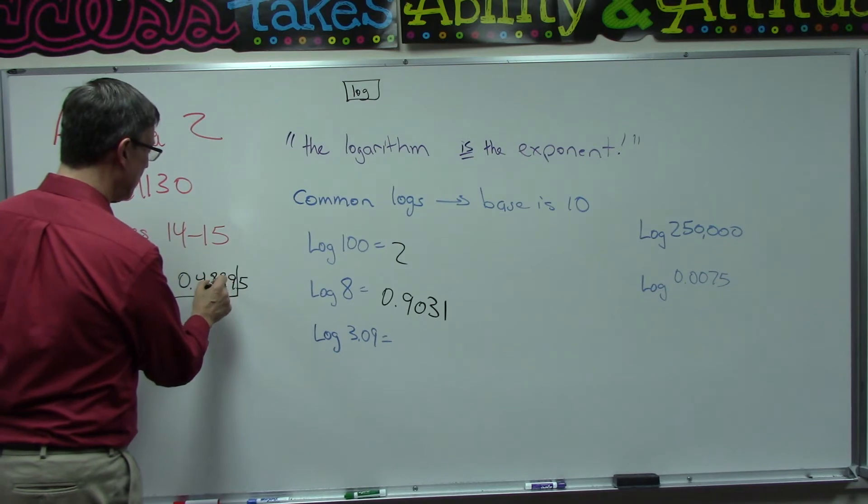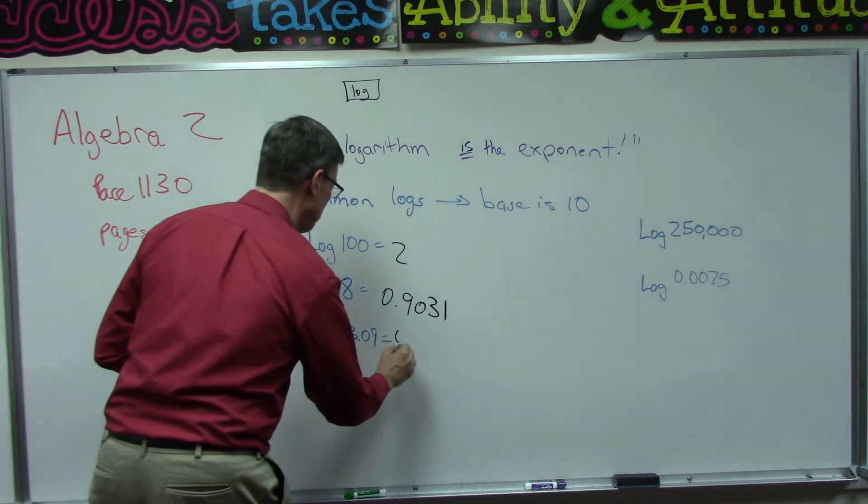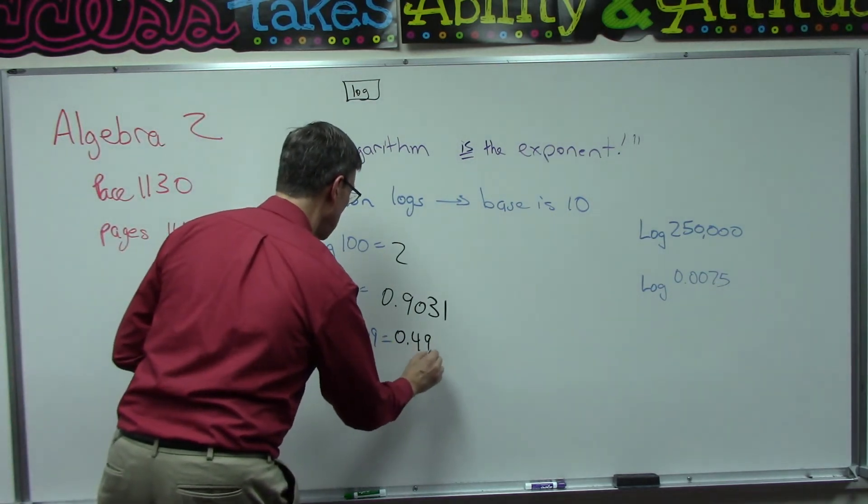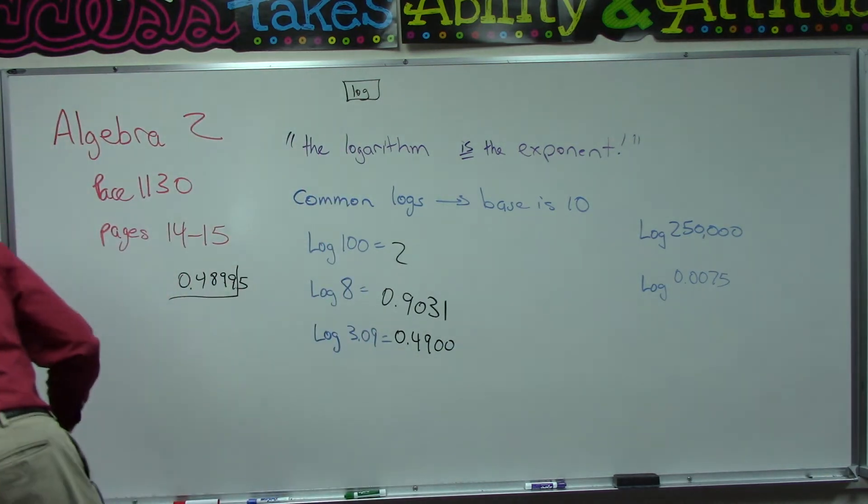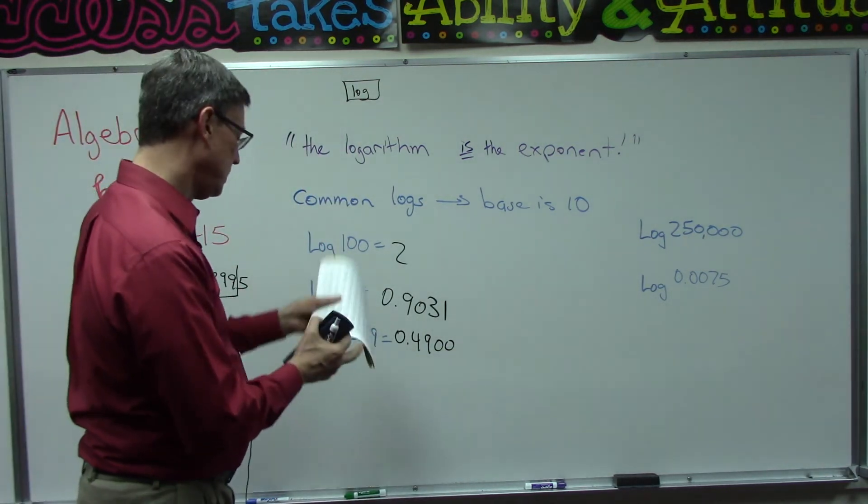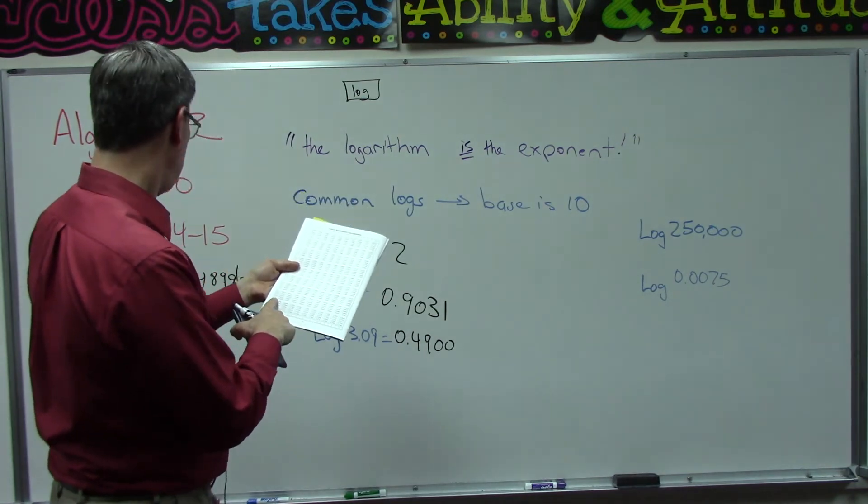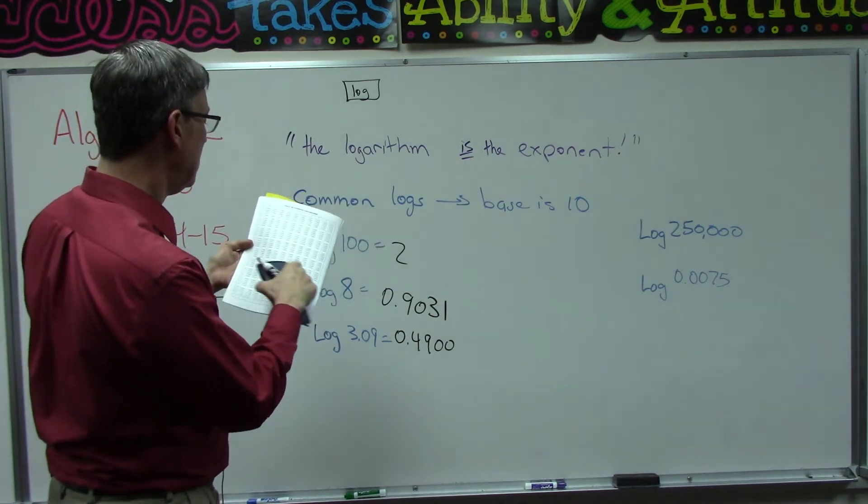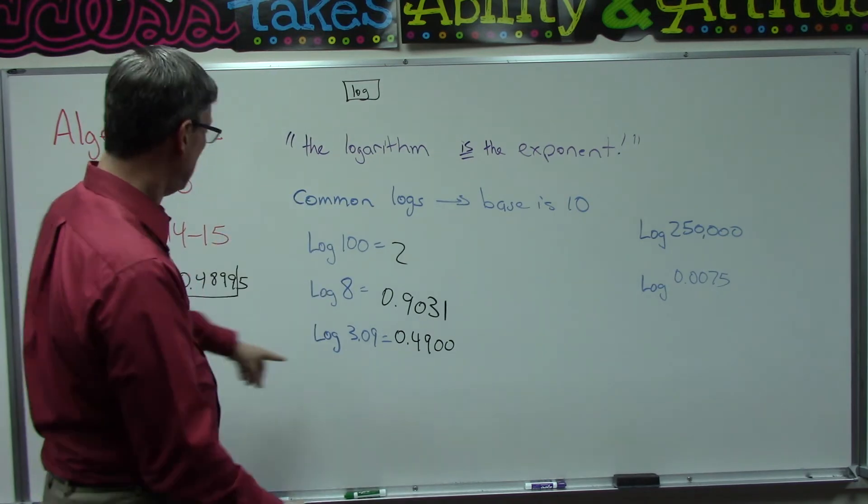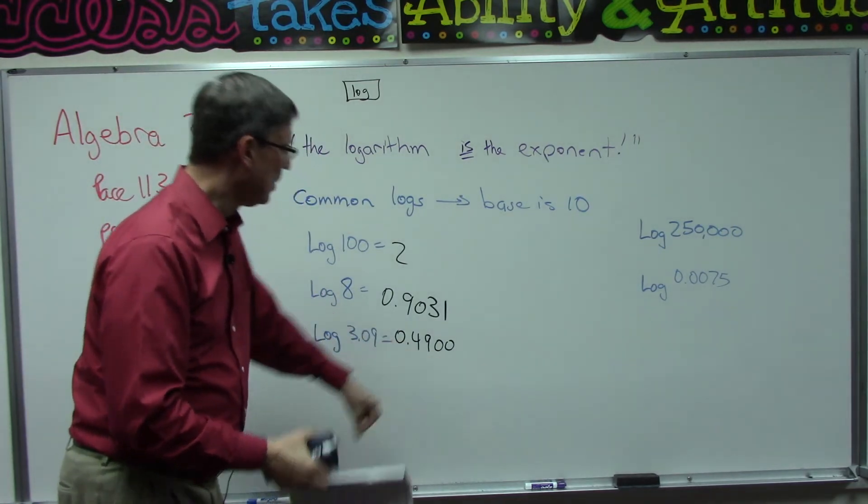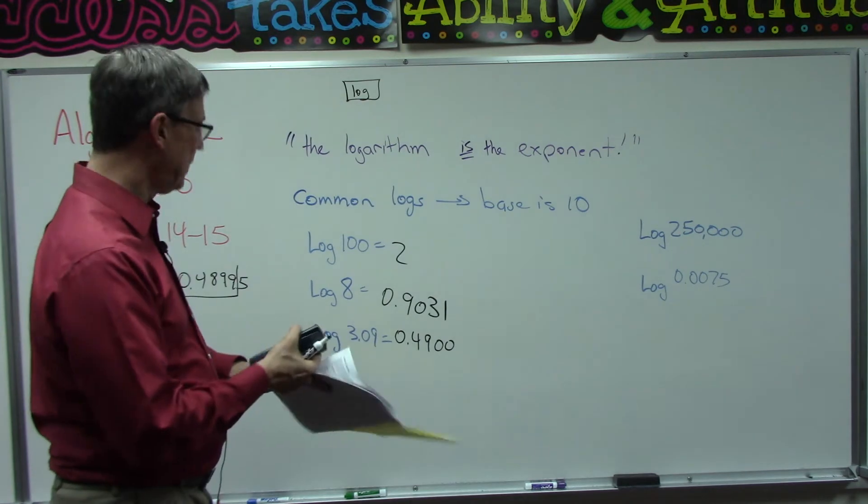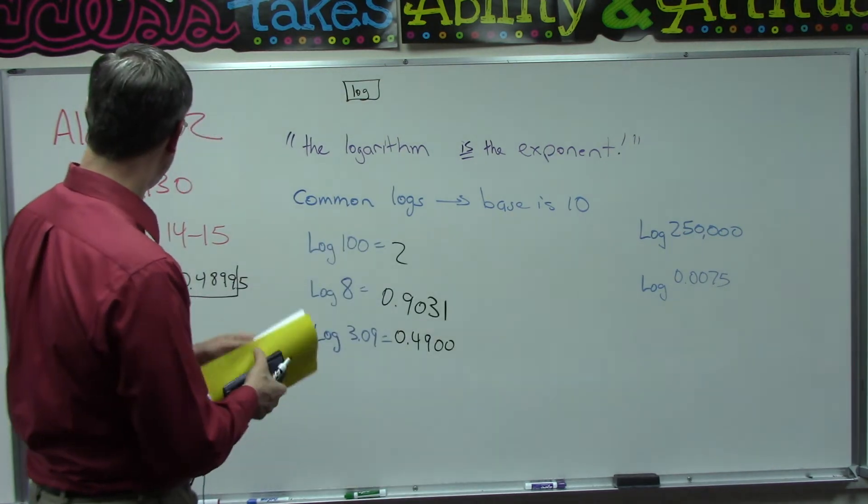Now let's talk about that 0.48995. I want to round it to four places here, but this 5 is going to round that up to a zero which is going to round that up which is going to round that up, so it looks like it's going to become 0.4900.